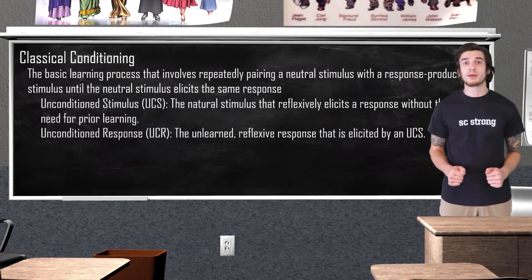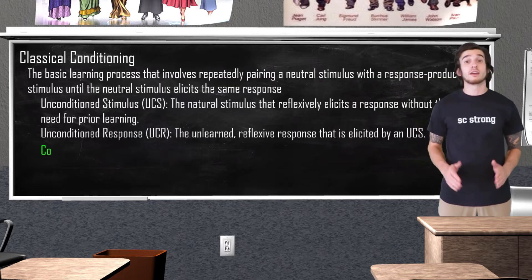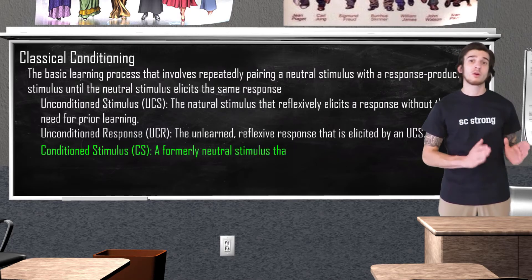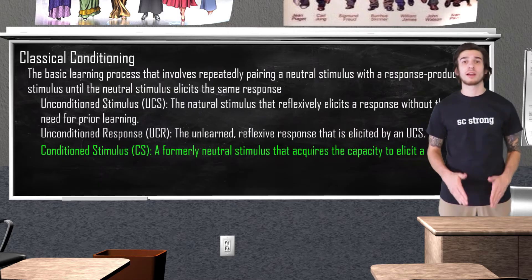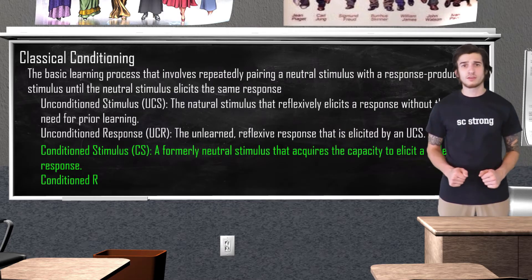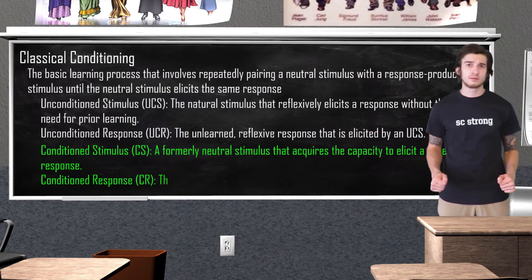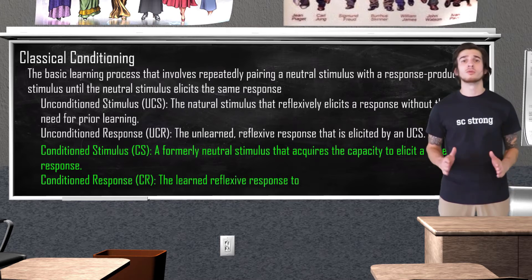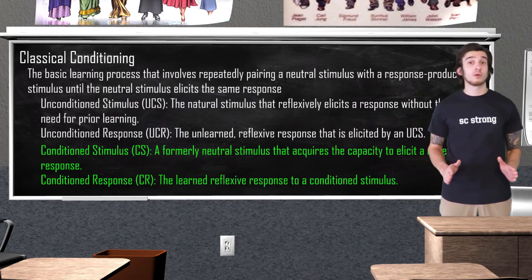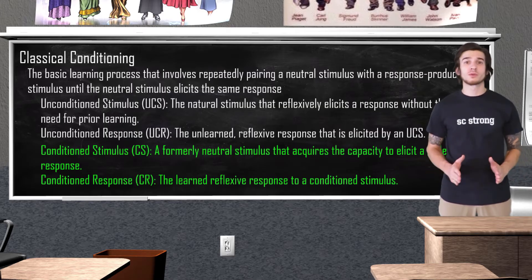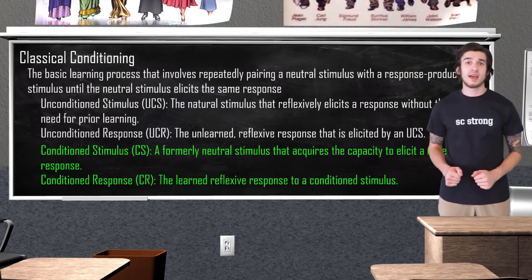When we introduce a neutral stimulus to the mix and pair it with our unconditioned stimulus, learning can take place. The conditioned stimulus is a formerly neutral stimulus that acquires the capacity to elicit a reflexive response. The conditioned response, or CR, is the learned reflexive response to a conditioned stimulus. When we see the word conditioned, it means that learning has occurred. According to Pavlov, for a neutral stimulus to become a conditioned stimulus, several pairings have to be made in quick succession.